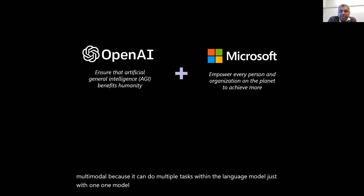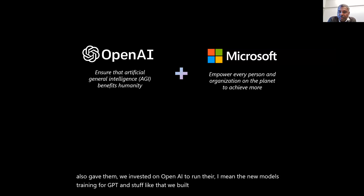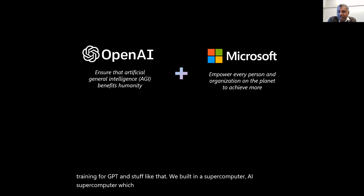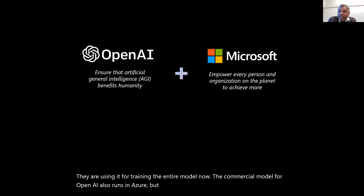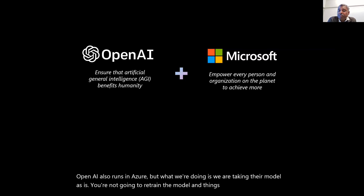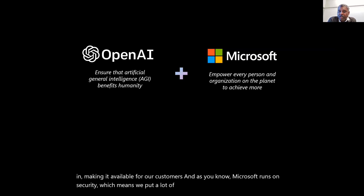We invested in OpenAI to run their new model training for GPT. We built an AI supercomputer which they are using for training the entire model. The commercial model for OpenAI also runs in Azure. We're taking their model as-is — not retraining it — and making it available for our customers. Microsoft runs on security, which means we put a lot of effort on data privacy and data security.